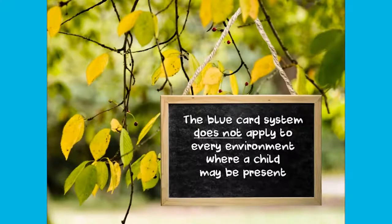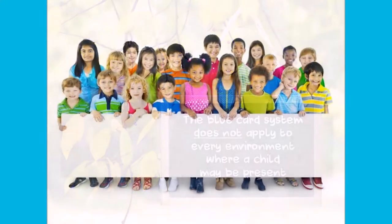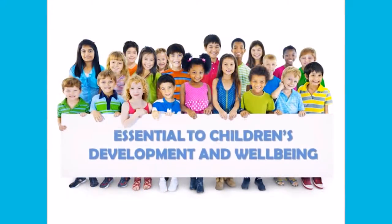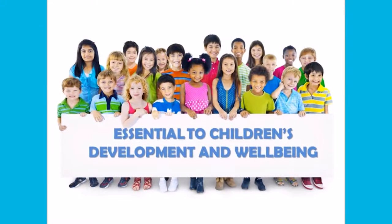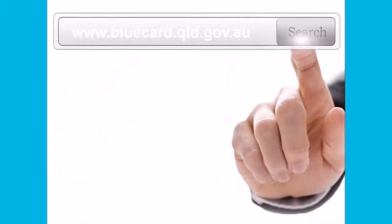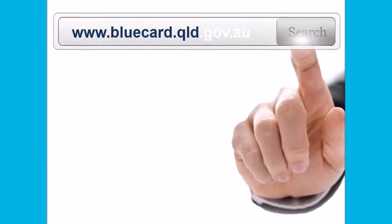The blue card system is structured so that organisations providing services which are essential to children's development and wellbeing, such as childcare, education, sport and cultural activities, are captured. Further information to assist you in determining whether your organisation is regulated can be accessed on the Blue Card Services website.